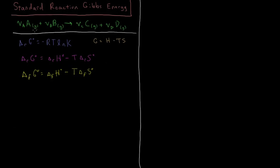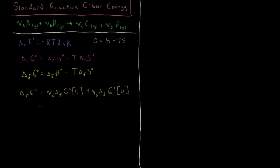In terms of the Gibbs energy of formation, for our reaction above, our standard Gibbs energy of reaction becomes: each stoichiometric coefficient times the standard molar Gibbs energy of formation of that product. So nu_C times the Gibbs energy of formation of C, plus nu_D times the standard Gibbs energy of formation of D, minus nu_A times the standard Gibbs energy of formation of reactant A, and similarly for reactant B.